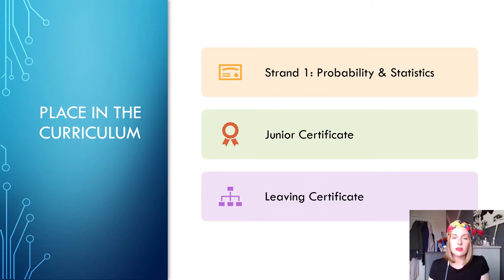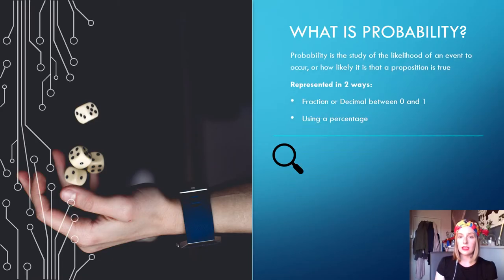Probability has its place in strand 1, probability and statistics of both the junior certificate and the leaving certificate. What is probability? Simply put, it is how likely something is to happen. It can be measured in two ways, either as a fraction or decimal between 0 or 1, or as a percentage. Probability explores the concept of uncertainty and outlines how we can only predict the chance of an event occurring.